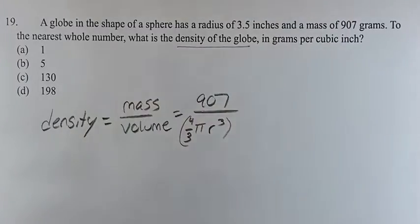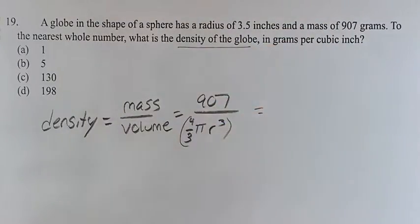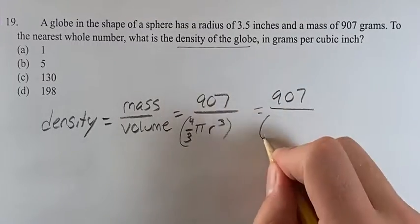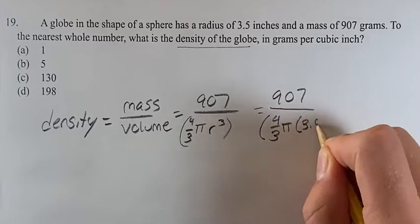So what we have to do is calculate what that is. Luckily we know the radius, or r, is 3.5. 907 over four-thirds pi times 3.5 cubed.